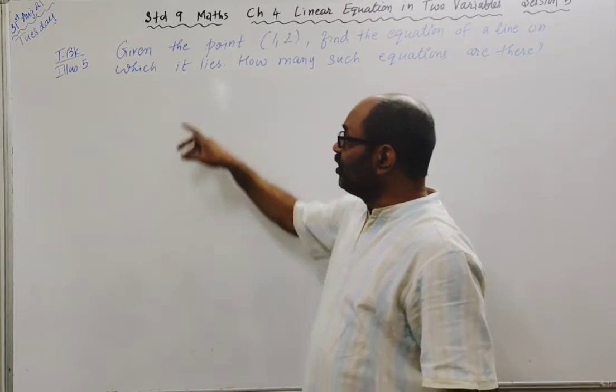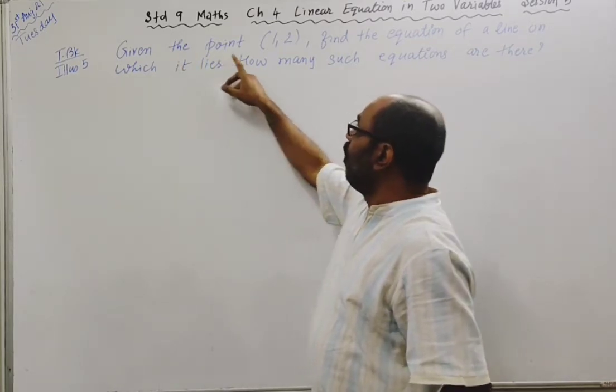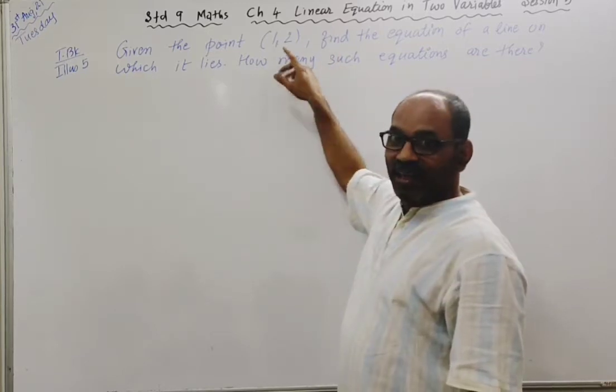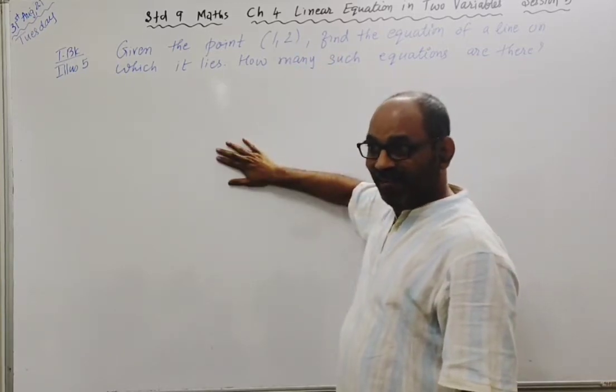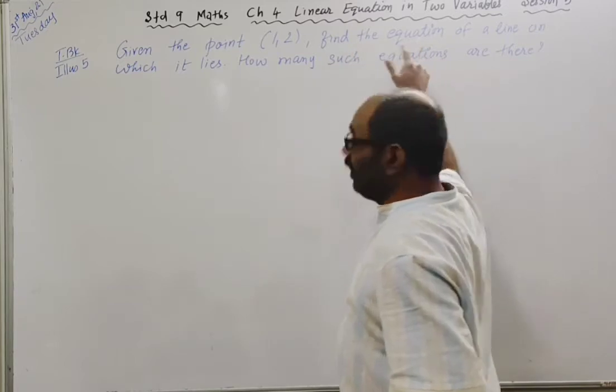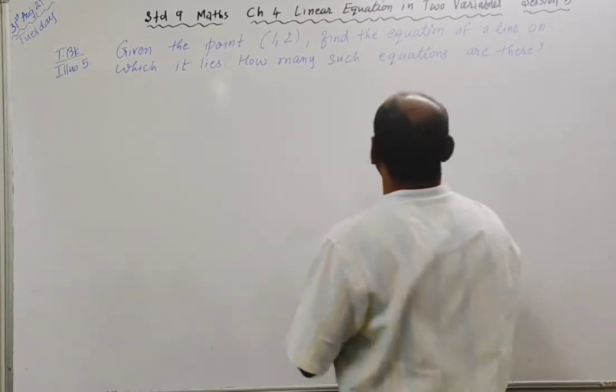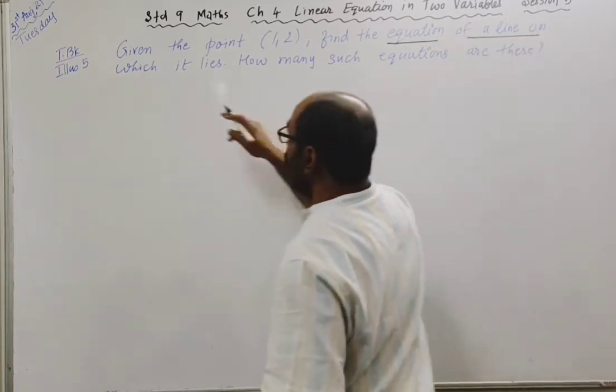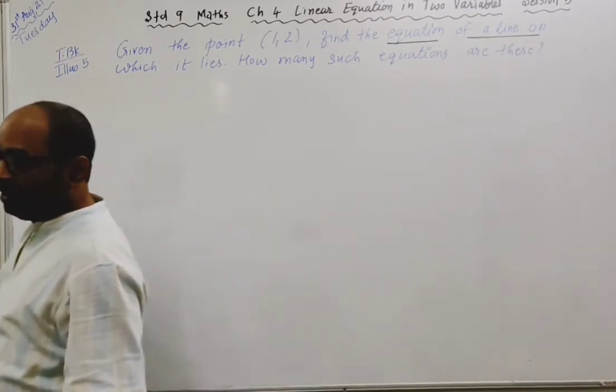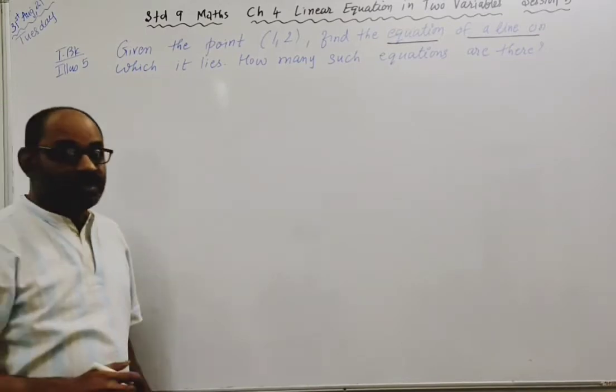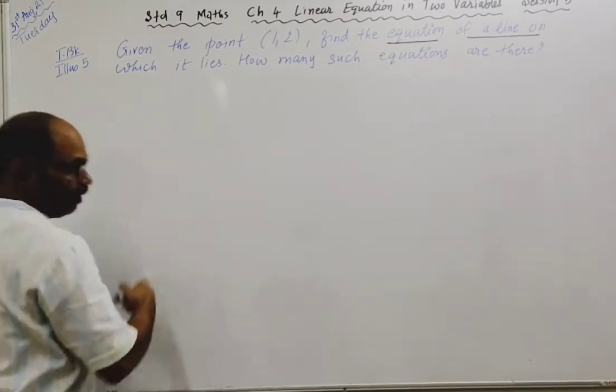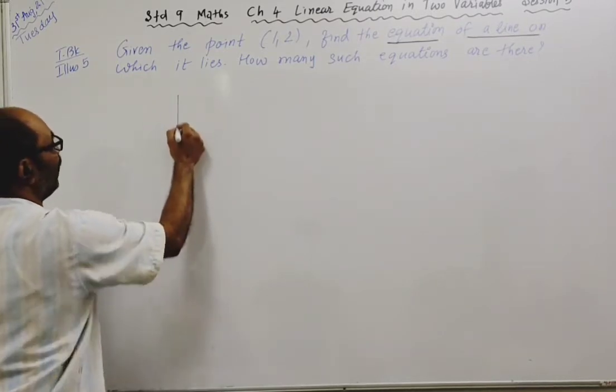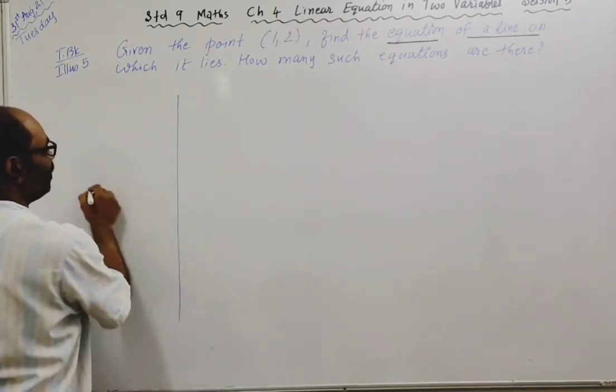What is the question here? Given the point (1, 2), an ordered pair, it will be in the Cartesian coordinate plane. Find the equation of a line on which it lies. First, understand this statement.